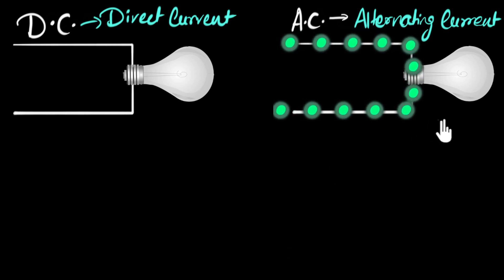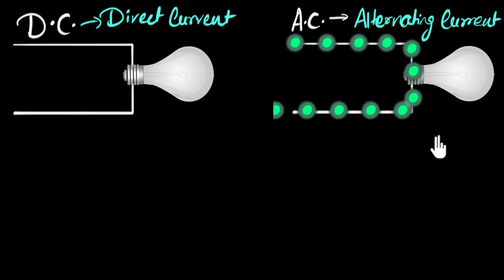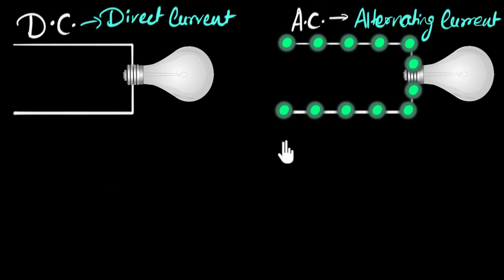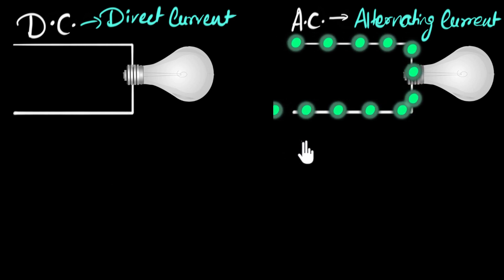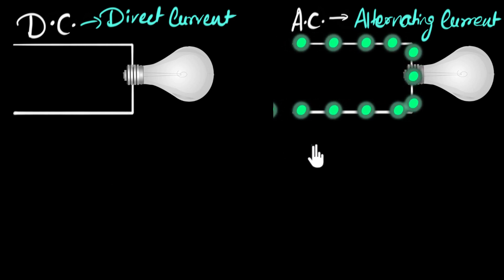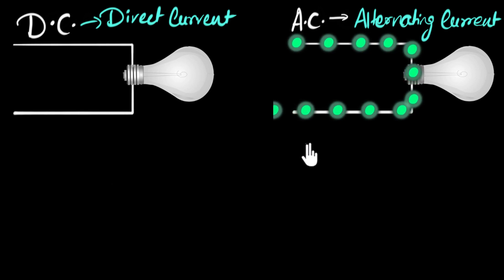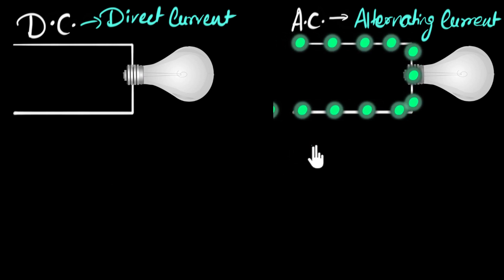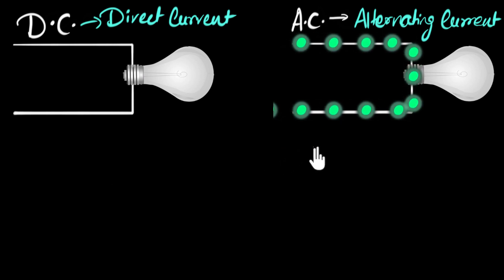But why does that make our bulb flicker? Let's look at these electrons a little bit carefully in slow motion. As the electrons are going forward, notice when it's about time to change the direction, they first come to a stop and then change the direction. They go back, stop, and then change direction again — forward, stop, backward, stop, forward, stop, and so on.